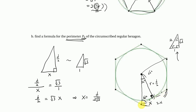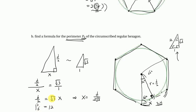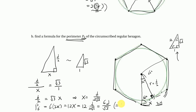Each side of the circumscribed hexagon is 2X, and there are 6 sides, so the total perimeter is 6 times 2X = 12X. Substituting X = D/(2√3), we get Capital P6 = 12 × D/(2√3) = 6D/√3, which simplifies to 2√3·D.